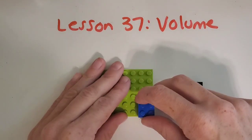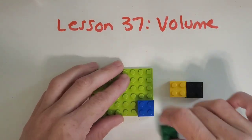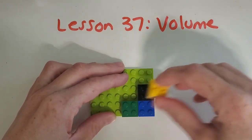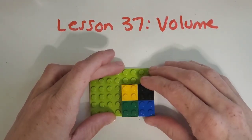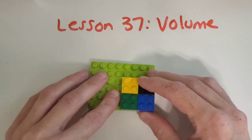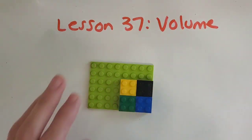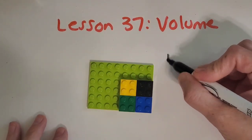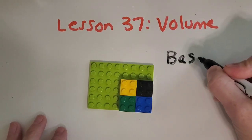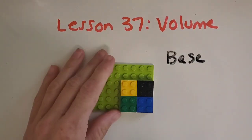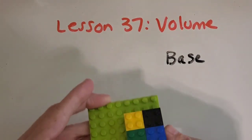So that is my first layer, and I can also call it — like I just said — the base. That's an important word to learn as we're talking about volume. So my base layer is four.